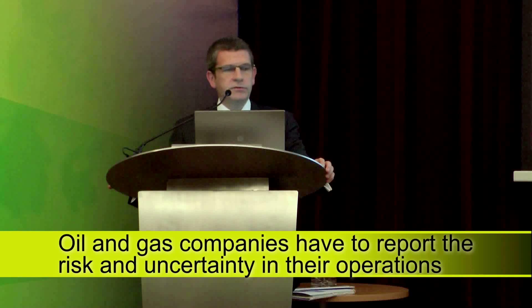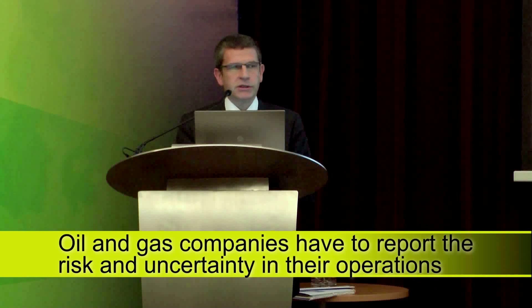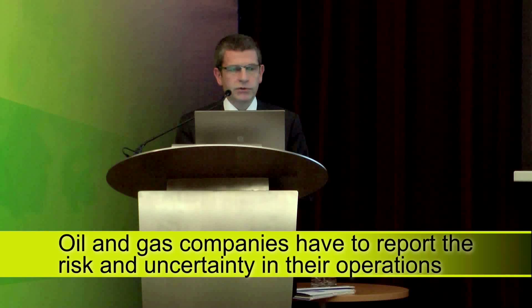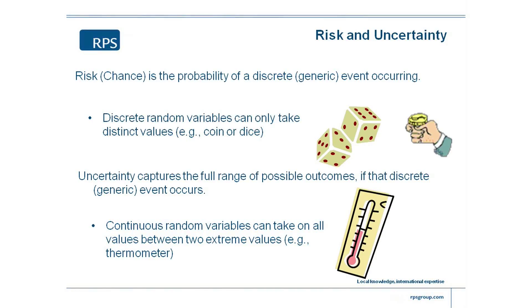The first thing we're going to define is: what is risk or chance? To an oil company, risk or chance is a discrete or generic event — a discrete random variable that can only take distinct values. The obvious example on the screen here would be throwing a dice or tossing a coin. If you toss a coin, the answer can always be heads or tails — it can't be anywhere between the two. If you're throwing a dice, it's got to be either a one, two, three, four, five, or six. It can't be five and a half or four and a half or anything in between.